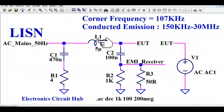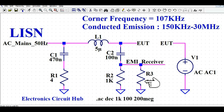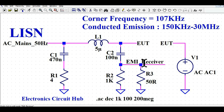This LC filter attenuates any frequency above 107 kHz coming from the AC mains port, keeping your DUT free of noise. You can use any values of L and C to achieve 50-ohm impedance at the EMI receiver. The LISN has three terminals: the AC mains port, the DUT connection port, and the EMI receiver port.